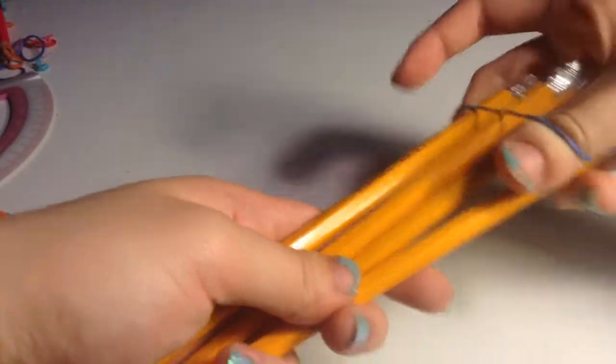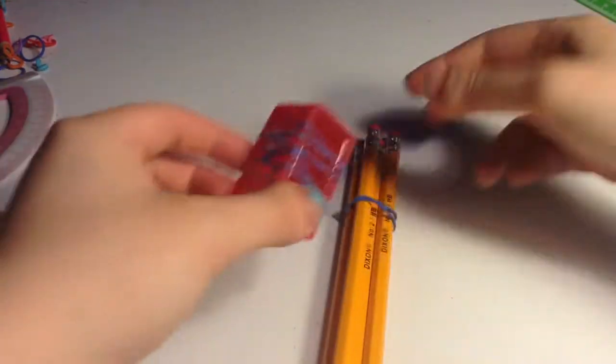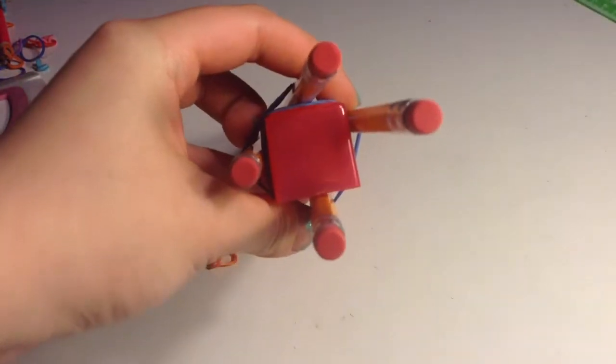Make your own loom for this bracelet. You're going to wrap your pencils with the rubber band and then take your square object and place it inside.